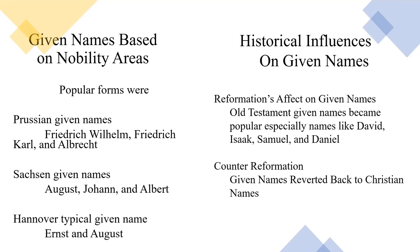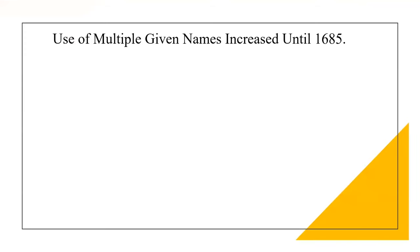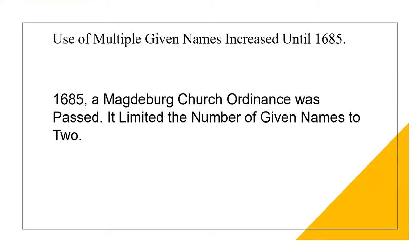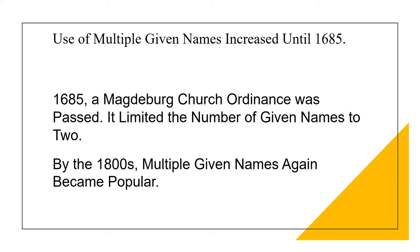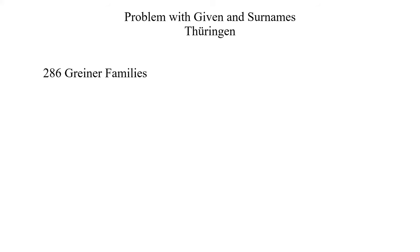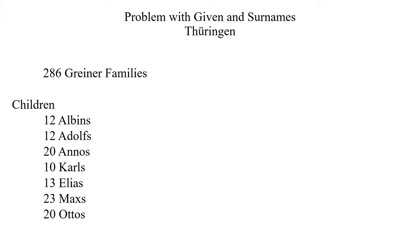Because of the Counter-Reformation, given names reverted back to Christian names. Use of multiple given names increased until 1685, when the Magdeburg Church Ordinance was passed. It limited the number of given names to two. By the 1800s, multiple given names again became popular. Because of feudalism, there was little if any population movement between nobility areas. In the Turingian area, at one time there were 286 families by the name of Griner. Of the children of the families, there were 12 Albans, 12 Adols, 20 Anos, 10 Carls, 13 Eliases, 23 Maxes, and 20 Autos.